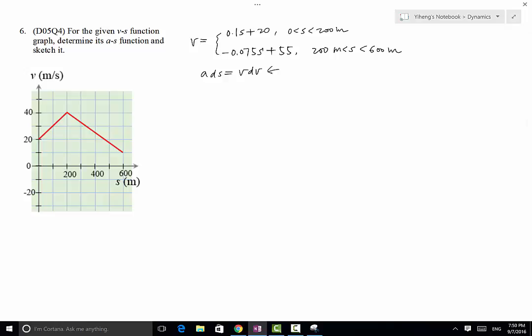Because v is given as functions of s, so we can do this. We can simply divide the equation by ds on both sides. So on the left hand side we only have a left. On the right hand side we will have v times dv/ds. And because v is given as a function of s, therefore this part right here actually is only going to be a function of s. So this actually is not a very difficult problem.